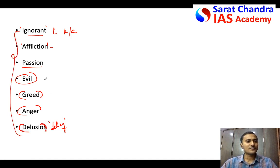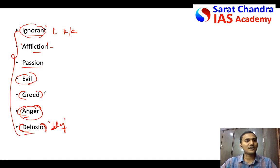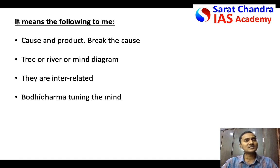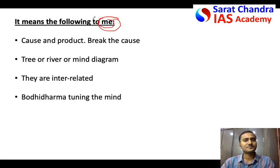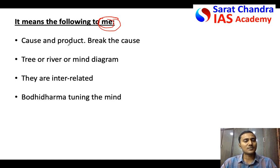You don't need to write the meanings of all these words — select two or three that you think need explanation. For example, anger and ignorance may not need explanation. For the remaining words, define them in the introduction, then start explaining what you mean by the quotation. You can say 'it means the following to me,' since the question asks what you mean by it. Try to write three to four different aspects of the quotation — not just one or two sentences — so that at least one or two connect with the evaluator and you can fetch some good marks.